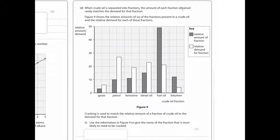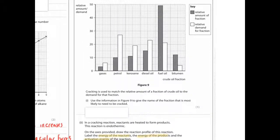When crude oil is separated into fractions, the amount of each fraction obtained rarely matches demand for that fraction. Figure 9 shows the relative amounts and demands for six fractions. Cracking is used to match the relative amount of a fraction to the demand. If you had a lot of one and a small demand, you can actually crack that molecule into smaller molecules. It means literally break up long chains to make smaller, more useful alkanes and alkenes. You can see here the demand is much higher, so you could crack these molecules into smaller petrol molecules. Use the information in figure 9 to give the name of the fraction most likely to need to be cracked. So the one in greatest supply but lowest demand - that would be fuel oil.